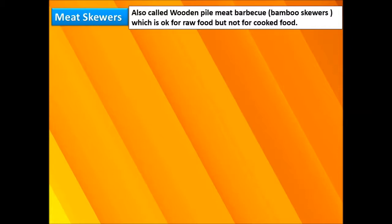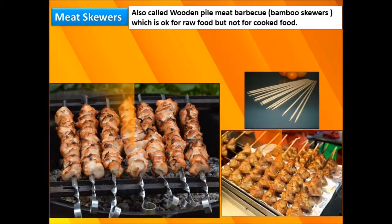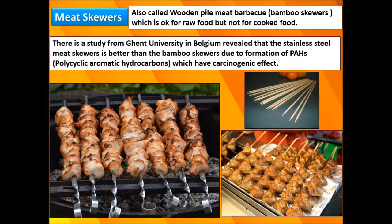The last topic in this presentation is meat skewers, a tool used in barbecue. Bamboo skewers are okay for raw food but not for cooked food. There is a study comparing stainless steel meat skewers and bamboo skewers, done at Ghent University in Belgium.